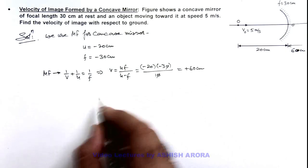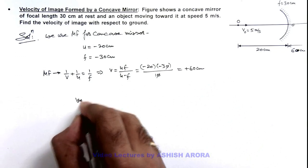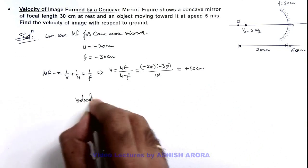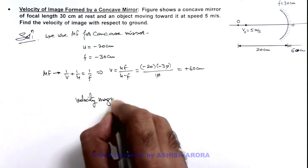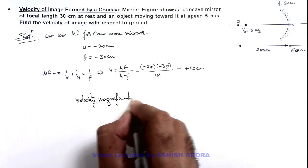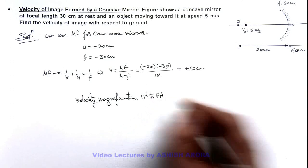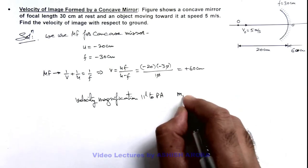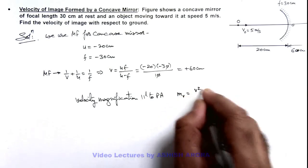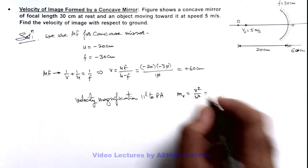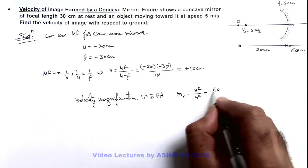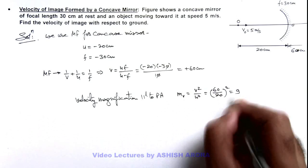Here as we have got the position of image we can calculate the velocity magnification parallel to principal axis, which we already discussed. Magnification of velocity is v square by u square, which we can substitute here as 60 by 20 whole square, that is equal to 9.